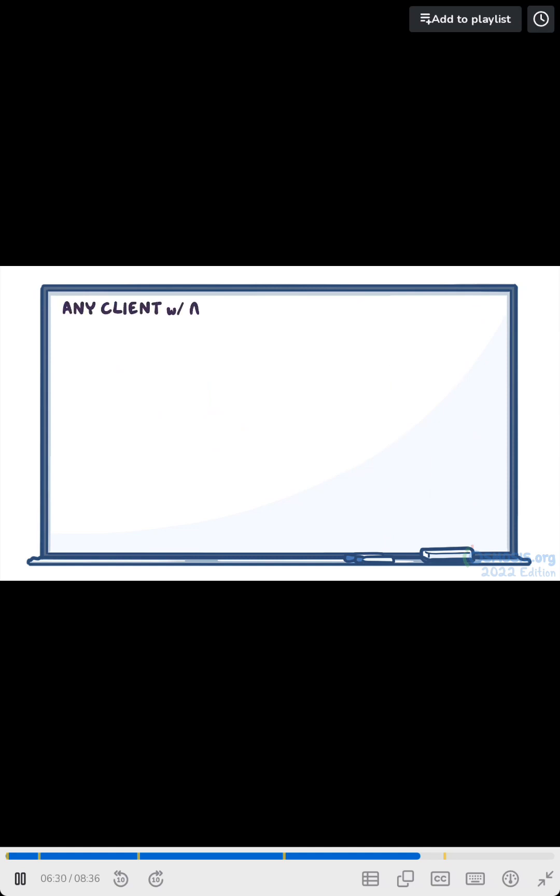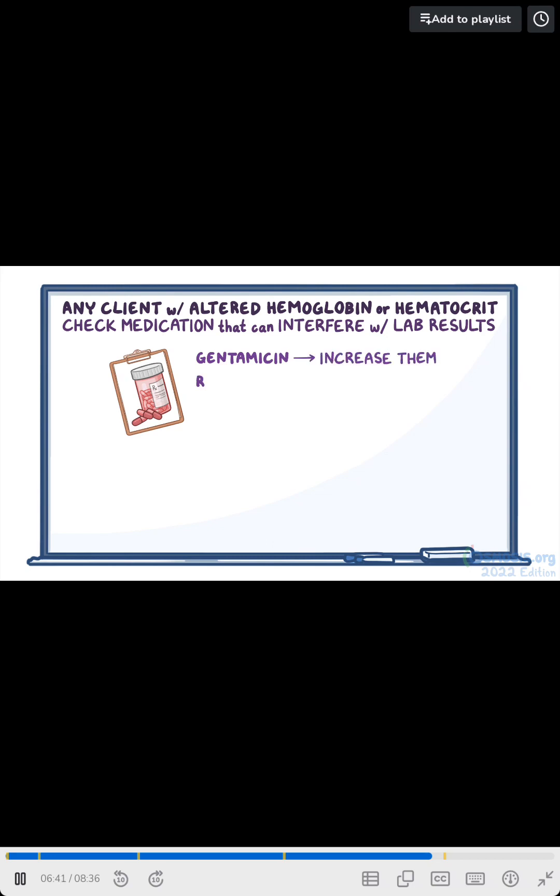Finally, for any client with an altered hemoglobin or hematocrit, remember to check their medication administration record for medications that can interfere with these lab results. For example, gentamicin can increase these levels, while rifampin, sulfonamides, and indomethacin can decrease them. Also keep in mind that if your client smokes, their hemoglobin can be higher due to their body's response to decreased oxygenation.